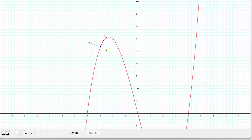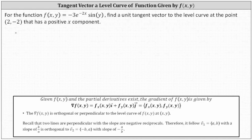We can use this fact to determine a potential tangent vector and then determine a unit tangent vector. Let's begin by determining the gradient of f, which is the vector function in which the x component is equal to the partial of f with respect to x.